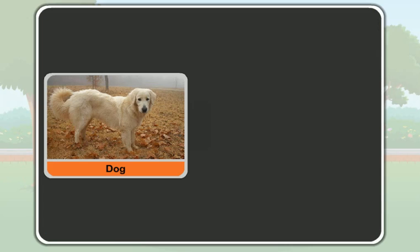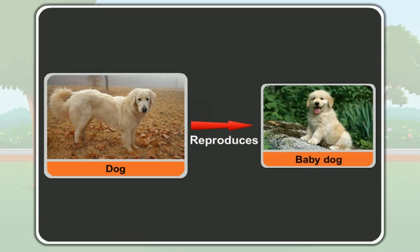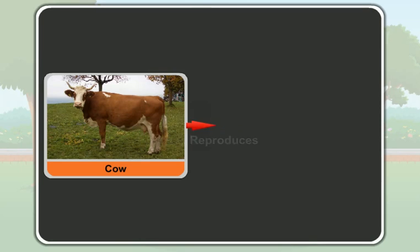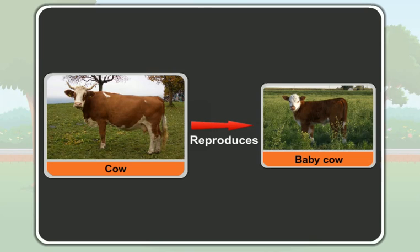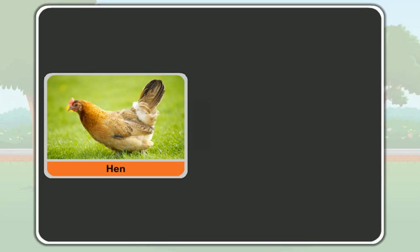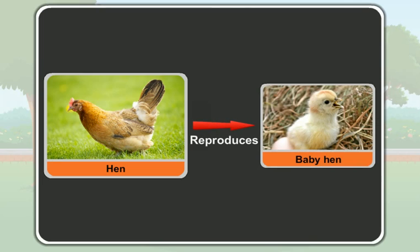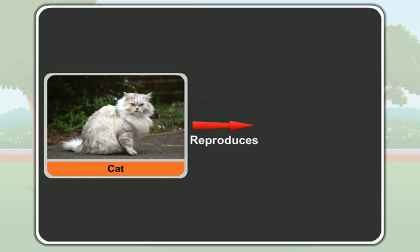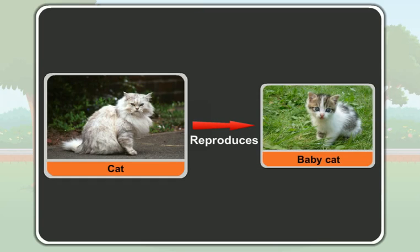A dog reproduces a baby dog. A cow reproduces a baby cow. Similarly, a hen reproduces a baby hen. A cat reproduces a baby cat.